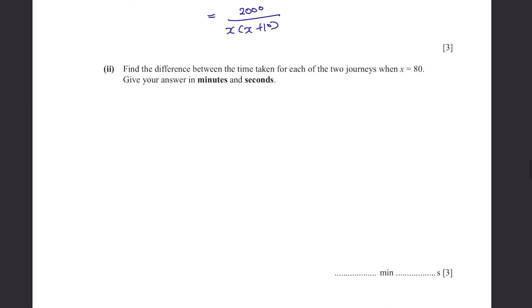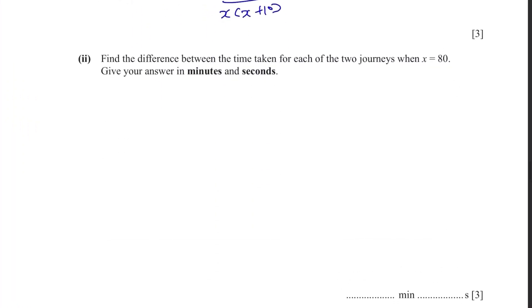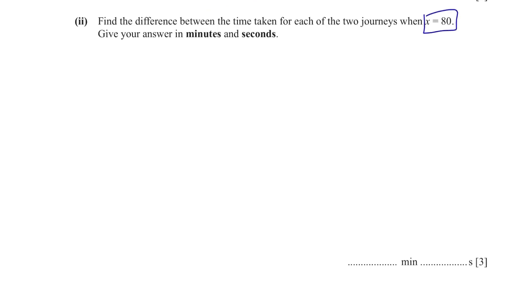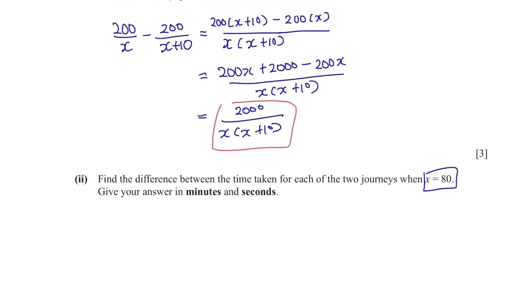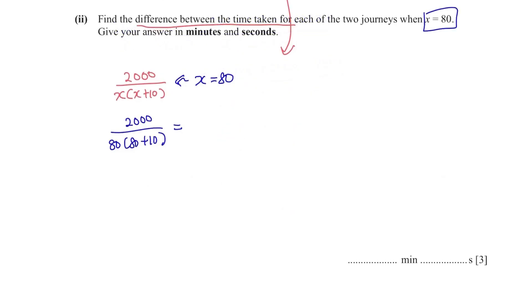Find the difference between the time taken for each of the two journeys when x equals to 80. Give your answer in minutes and seconds. Substitute 80 to the equation above because that stands for the difference between the time taken. You'll get this but you need to give it in minutes and seconds. So first, multiply it by 60. We have 16 and 2 thirds minutes. Convert 2 thirds minutes to seconds by multiplying it by 60. Your final answer should be 16 minutes 40 seconds as a result.